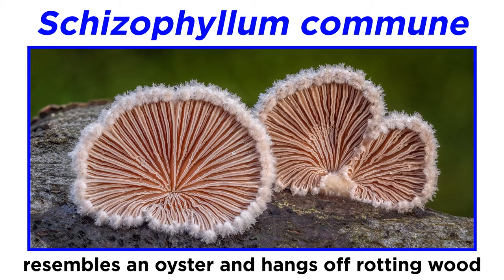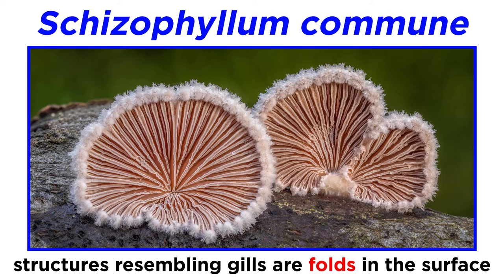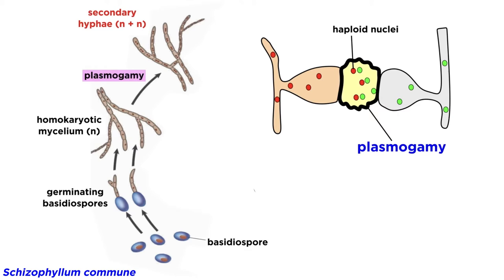This one to four centimeter long mushroom resembles an oyster and hangs off rotting wood. The underside has structures that resemble gills, but upon further investigation they turn out to be folds in the mushroom's surface.